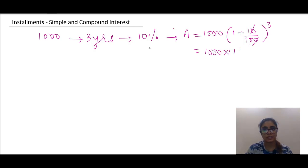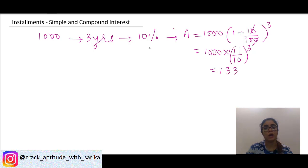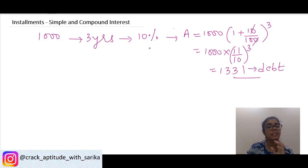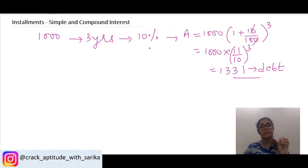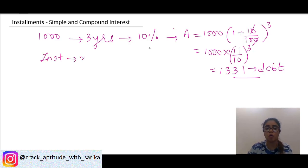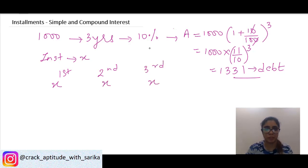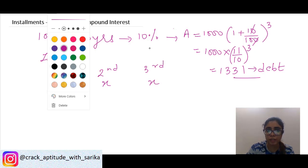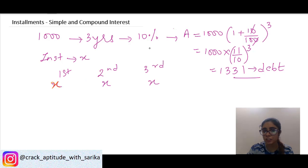1000 × (11/10)³ = 11³ = 1331. So my total debt is 1331 rupees. Now, if I pay x rupees each year: first x at end of year one, x at end of year two, x at end of year three. On the first x, you get compound interest for two years, so it becomes x × 1.21. On the second x, interest for one year: x × 1.1. The third x has no further interest.